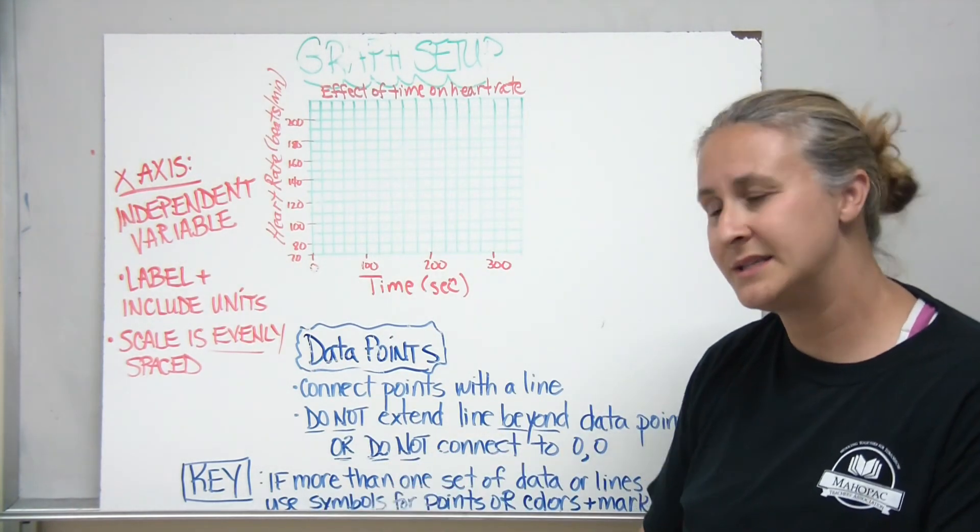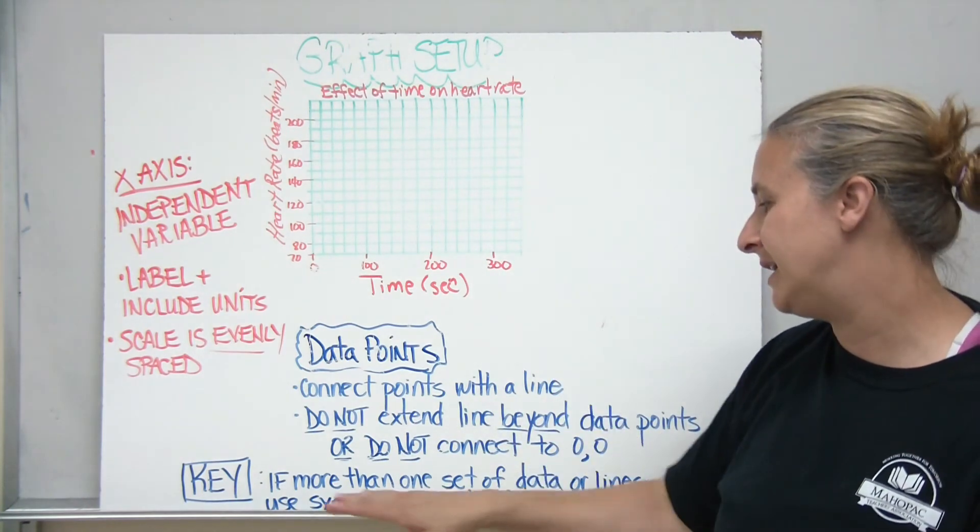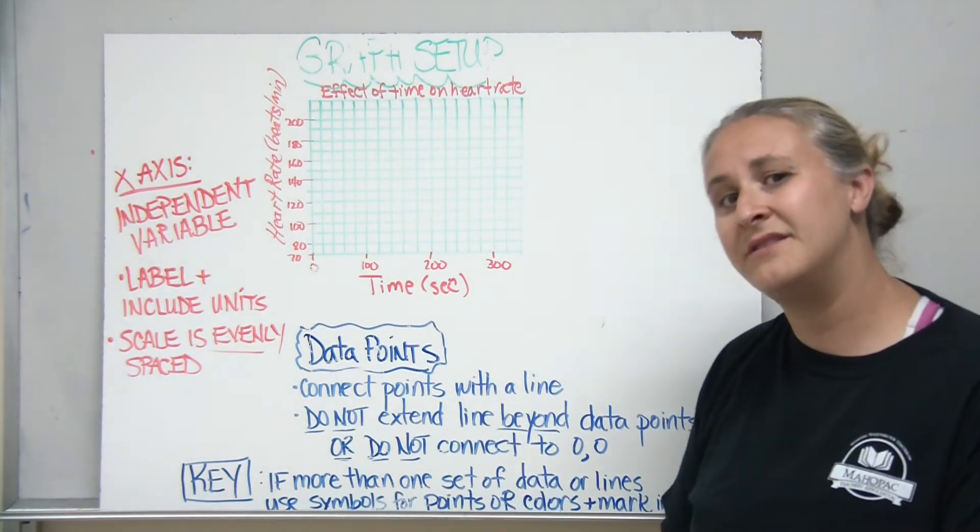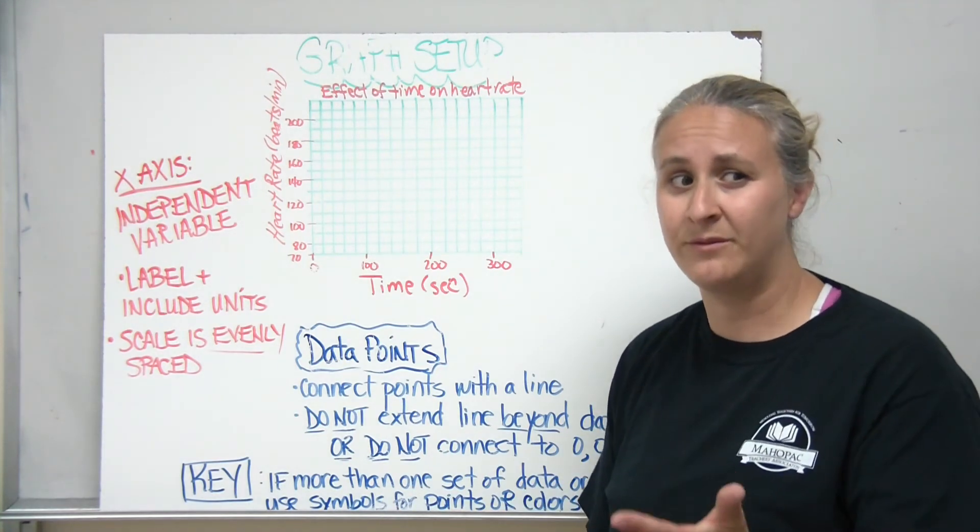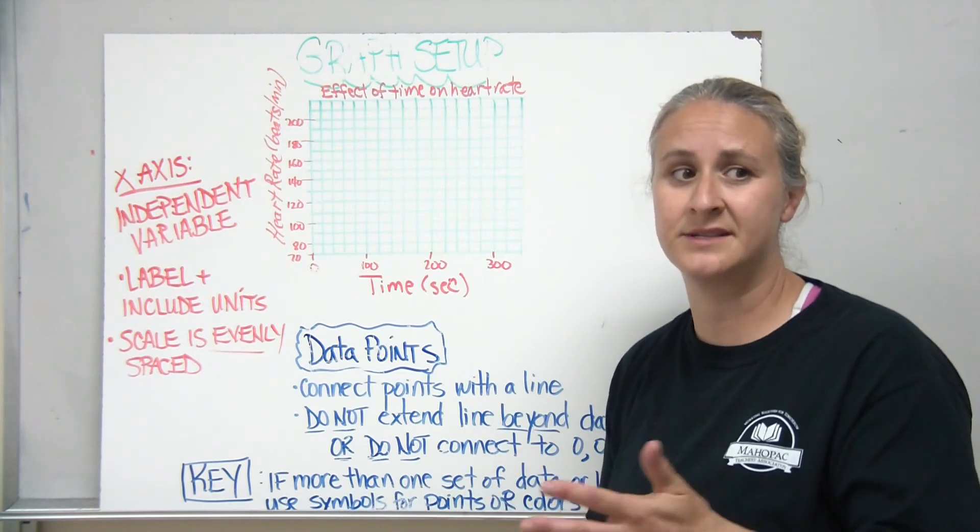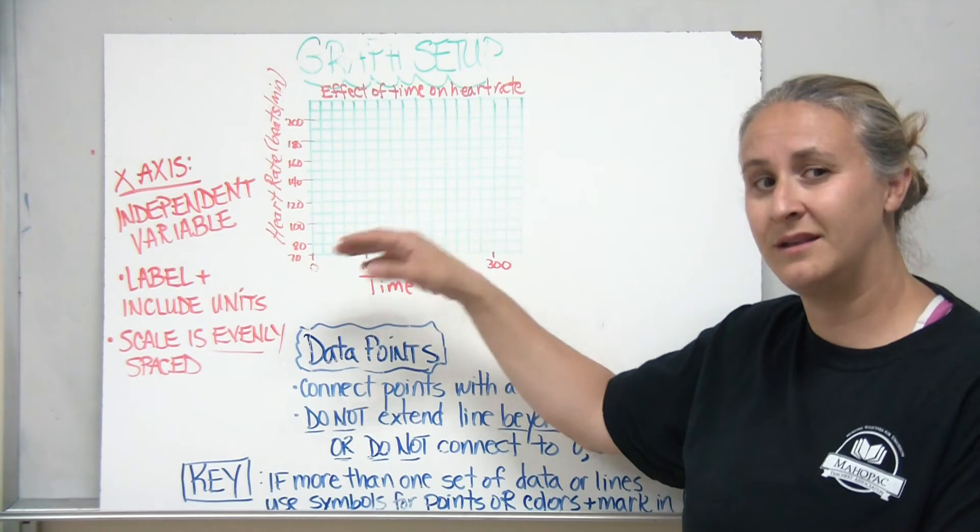One other thing to keep in mind is that you should have a key on the side. In this case, we haven't plotted our data yet, but if you have more than one set of data, an example would be multiple trials. If we did this experiment and we had multiple people exercising or we tried this three times, we may have three lines of data.